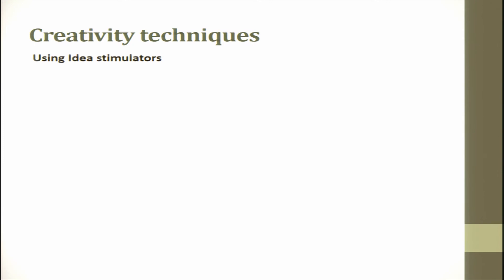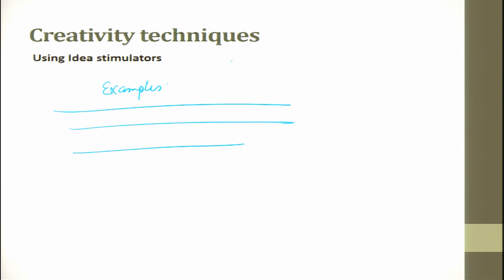When you use the idea simulator, you can have examples with multiple attributes and then have solutions — these attributes can be fixed and then you can have multiple solutions to solve whatever the problem is. It is like a tic-tac-toe — you try solving it and then you get it.